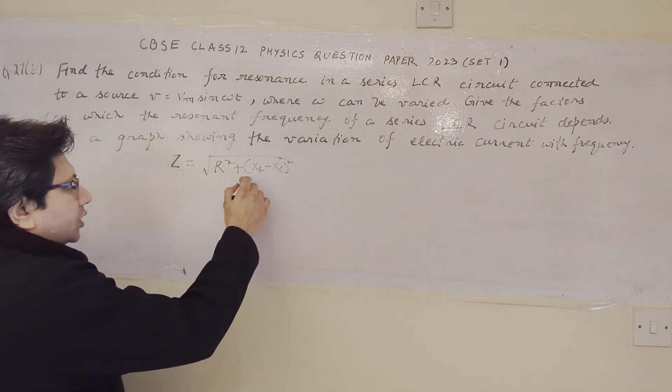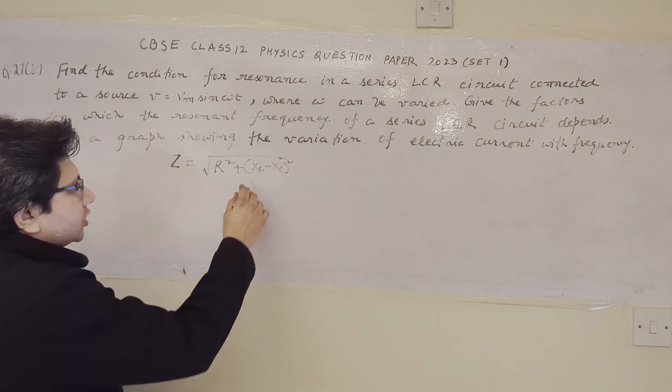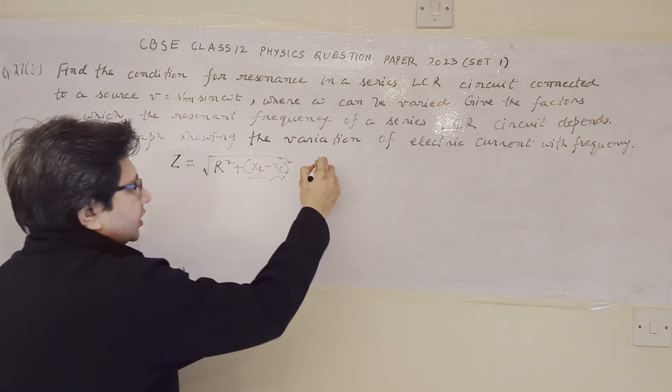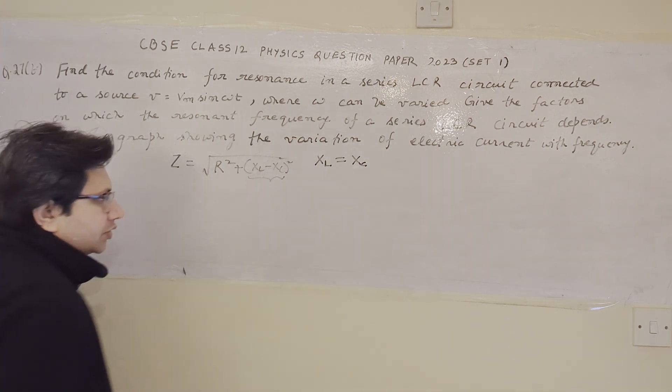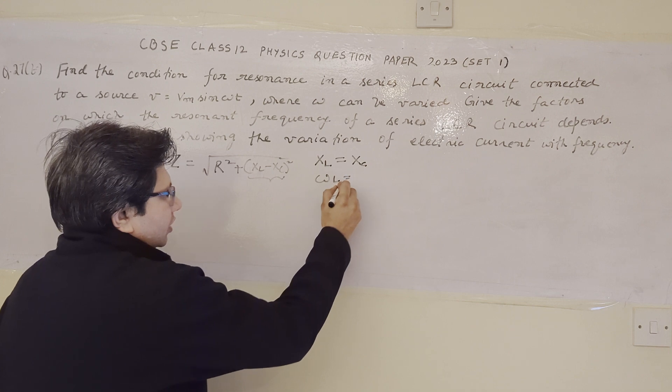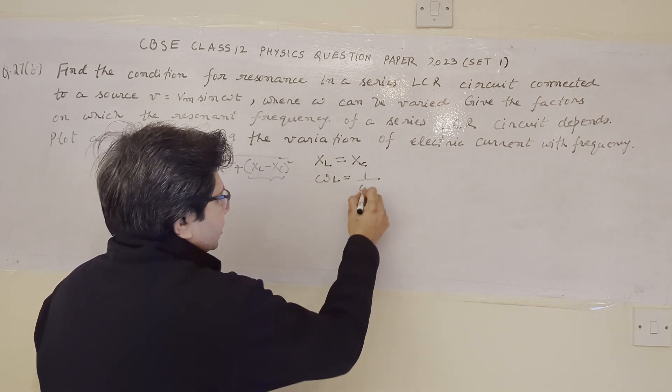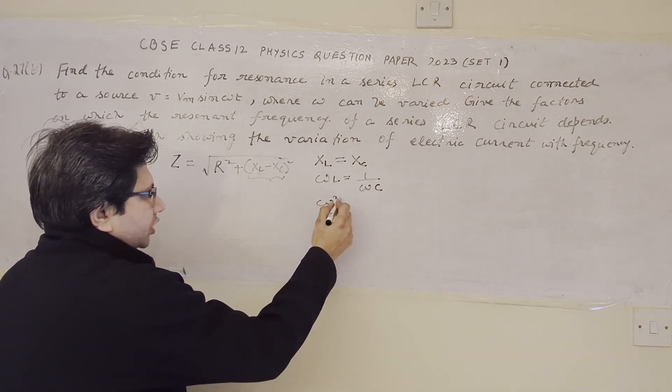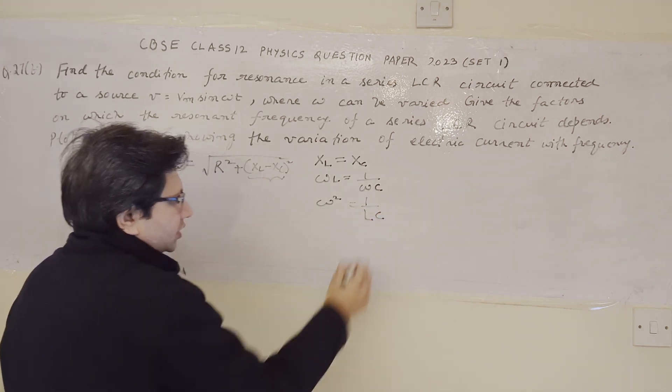Now, the resonance occurs when this impedance is minimum and impedance is minimum when this term is zero. When this term is zero, it means that the inductive reactance XL is equal to capacitive reactance XC. Now, XL is equal to omega L where omega is the radian per second frequency and XC is 1 upon omega C. So, cross multiplying omega here we get omega square and cross multiplying L in the denominator side we get 1 upon LC.